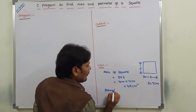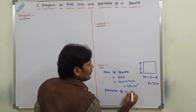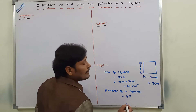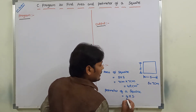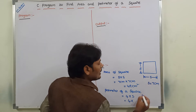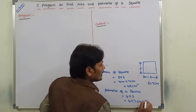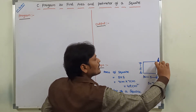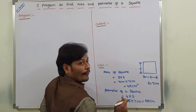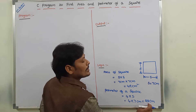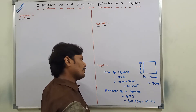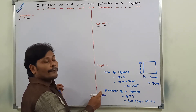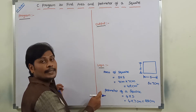Perimeter of a square is equal to 4 into s — that is 4 times the length of one side. So 4 into 7 centimeters equals 28 centimeters. Each side is 7 centimeters, and the total perimeter is 4 × 7 = 28 centimeters. So these are the two formulas for finding the area and perimeter of a square.